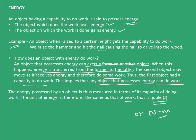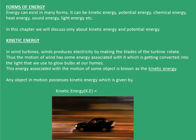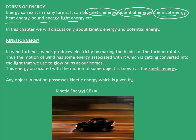Moving on to the next topic: forms of energy. Energy can exist in many forms — kinetic energy, potential energy, chemical energy, heat energy, sound energy, light energy, and so on. Kinetic energy is basically related to the motion of the object. Potential energy is related to the height of the object. Chemical energy is related to the chemical composition of the object. In this chapter, we will discuss only kinetic energy and potential energy.